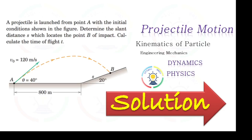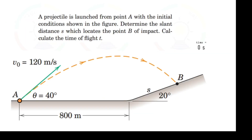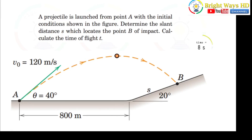In this video we will discuss a projectile motion problem. A projectile is launched from a point A with the initial conditions shown in the figure. We need to determine the slant distance s which locates the point B of impact, and also calculate the time of flight.